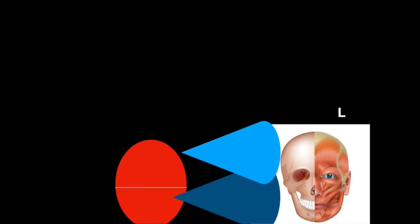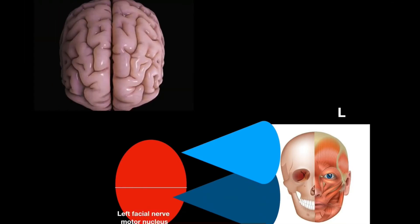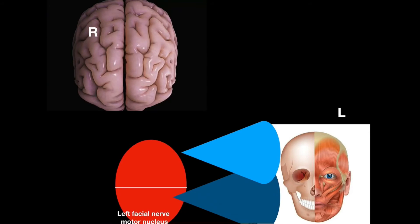Back to our main focus here that is the main motor nucleus. We saw that upper motor neuron lied in the cerebral cortex. And their tracts provide signals up to lower motor neuron which in this case is facial nerve motor nucleus.